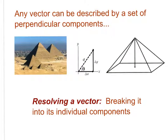If you remember our example with pyramids, we had both a horizontal component and a vertical component. The horizontal part and the vertical part are called components. They are perpendicular to each other, and any vector can be thoroughly described by a set of perpendicular components. In order to resolve a vector, we just break it into its individual components.